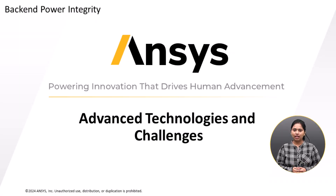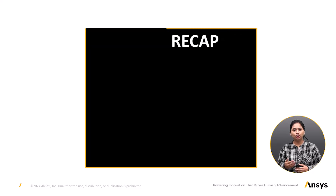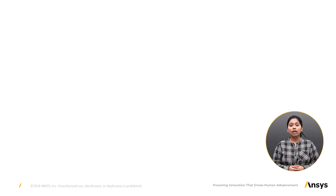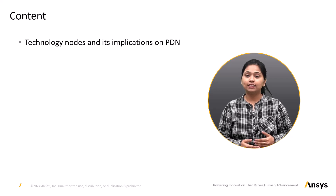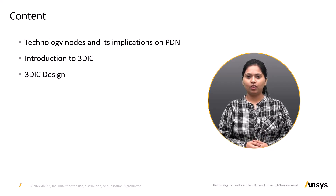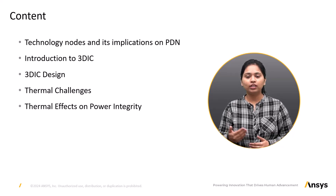Welcome to the final lesson of this ANSYS innovation course. In our previous lesson, we recapped all the topics covered so far. We dealt into chip manufacturing processes, packaging and testing, which are crucial for developing reliable chips for electronic devices. In this lesson, we will explore advanced topics such as technology node evolution and its significant implications, the 3D IC architecture, and thermal challenges and their impact on power integrity due to technology node shrinking and architectural advancements.